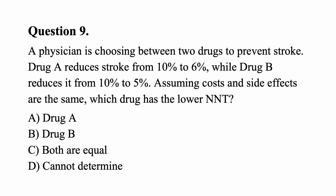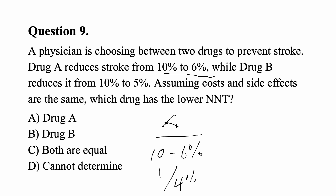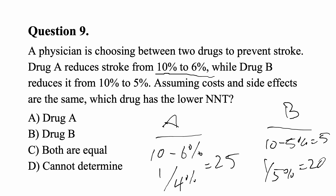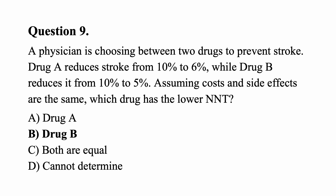Question nine: A physician is choosing between two drugs to prevent stroke. Drug A reduces stroke from 10% to 6%, while Drug B reduces it from 10% to 5%. Which drug has the lower number needed to treat? For Drug A, NNT equals 1 over 4% equals 25. For Drug B, NNT equals 1 over 5% equals 20. Drug B has the lower number needed to treat, so Drug B is the answer.